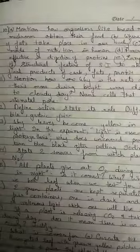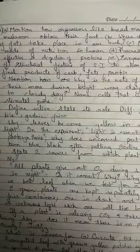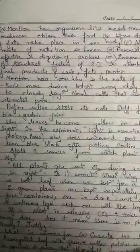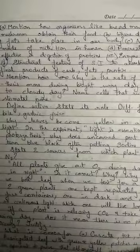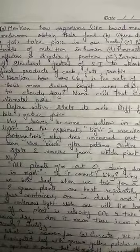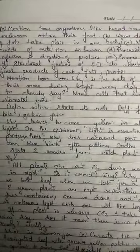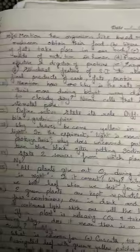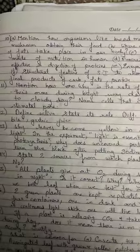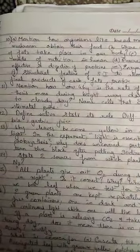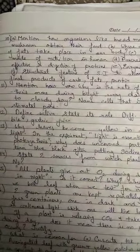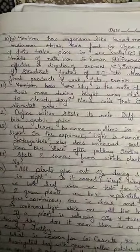The final products of carbohydrate digestion are glucose; fats yield fatty acids and glycerol; and proteins yield amino acids. The remaining questions, 11 to 19, will be discussed in the next class on Monday.